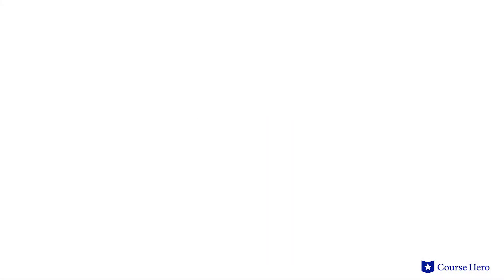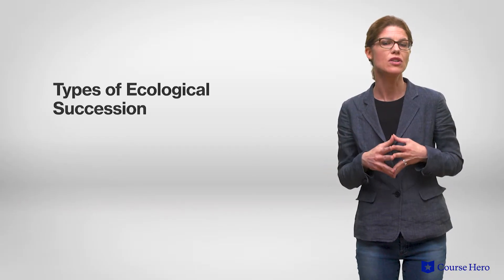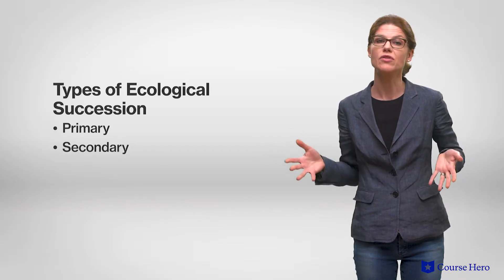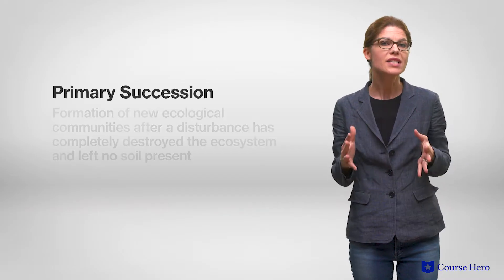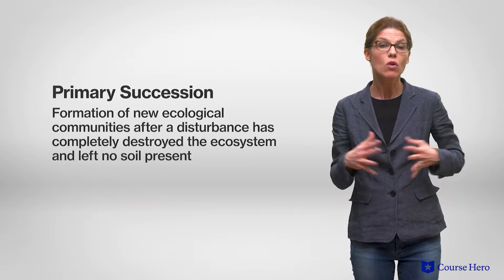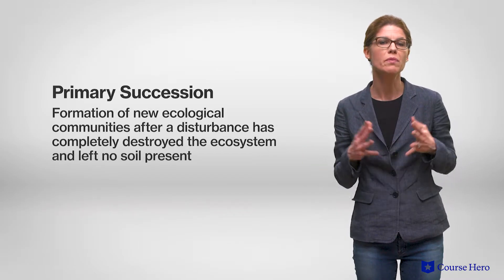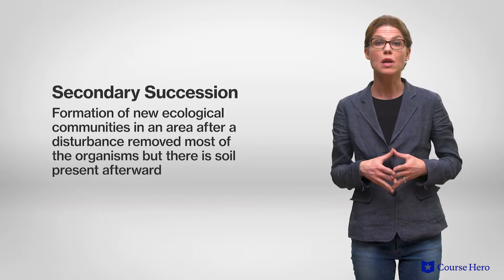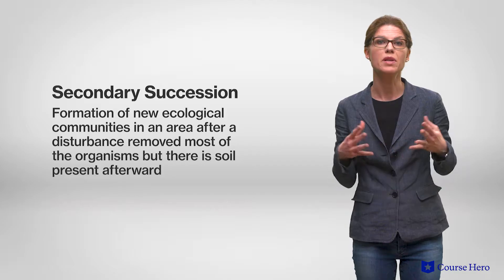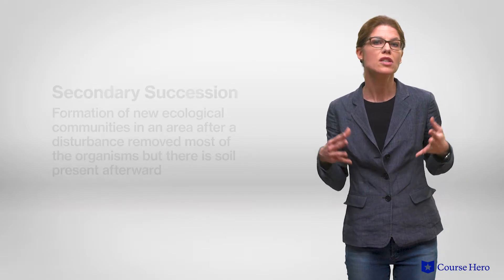In the event that a community becomes unstable, two types of ecological succession can occur: primary or secondary succession. Primary succession is when all the organisms have been removed from the environment, as occurs after a volcanic eruption. Secondary succession is when some organisms have been removed from the environment, such as trees being removed from a forest by logging. Let's look at each of these in more detail.